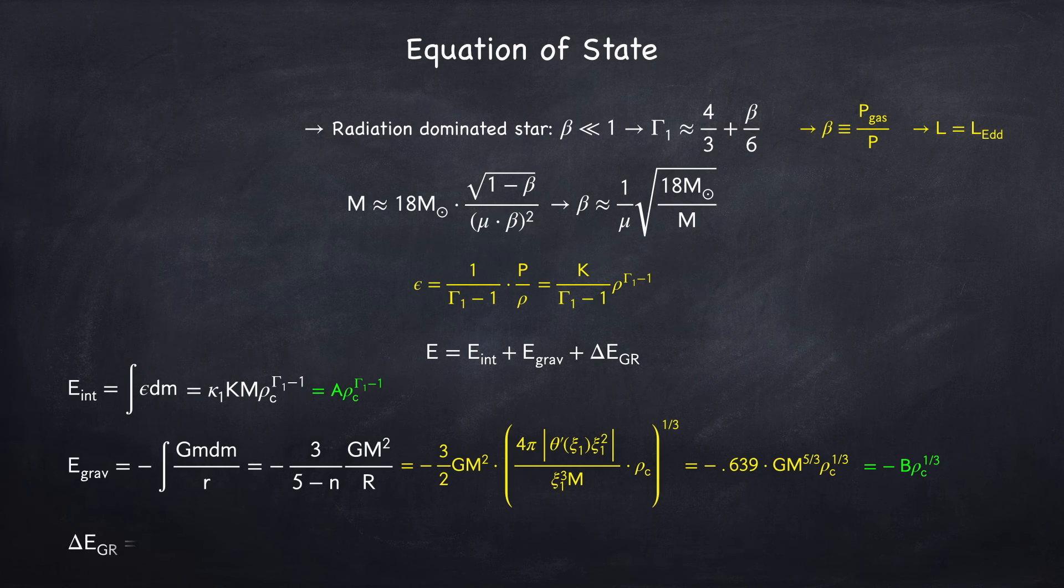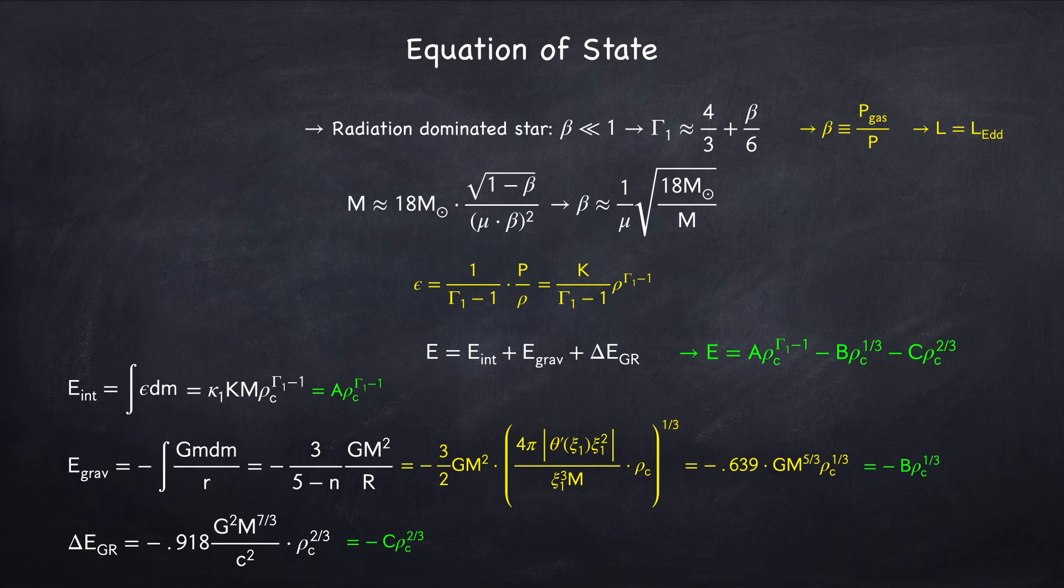In Stellar Physics 3f we derive the post-Newtonian GR correction, which we can also write as the negative of some constant c times the central density to the two-thirds. So now we have the total binding energy of the star as a function of the central density.